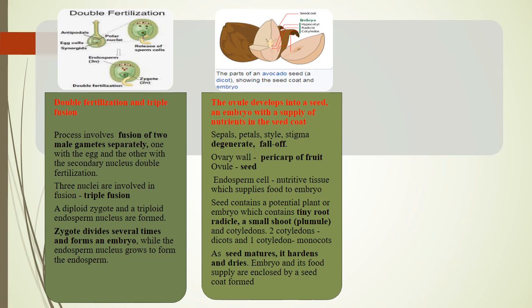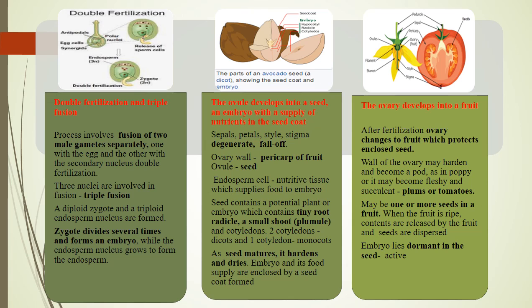As the seed matures, it hardens and dries, enabling it to survive in adverse environmental conditions. The embryo and its food supply are enclosed by the seed coat formed from the integuments of the ovule. The ovary develops into a fruit — the whole ovary after fertilization changes into a fruit which protects the enclosed seed. The wall of the ovary may harden and become a pod as in poppy, or may become fleshy and succulent as in plums or tomatoes. There may be one or more seeds in a fruit. When the fruit is ripe, seeds are dispersed. The embryo lies dormant in the seed, and at the onset of favorable conditions, it becomes active and germinates into a small seedling through the seed germination process.